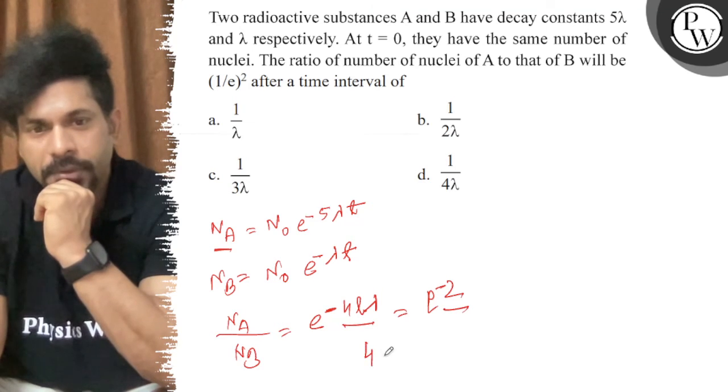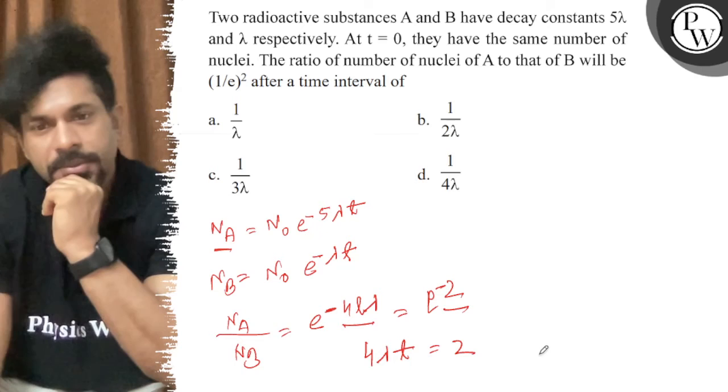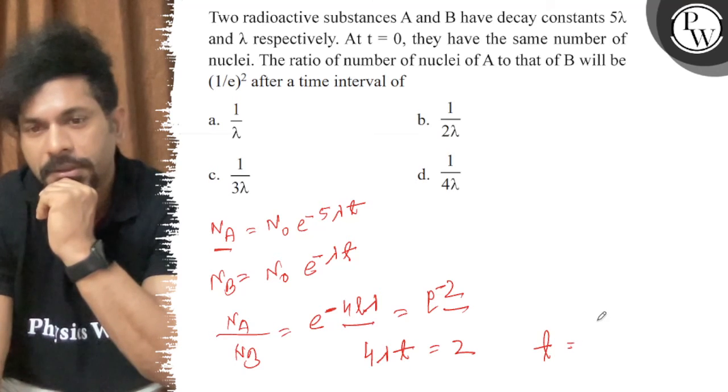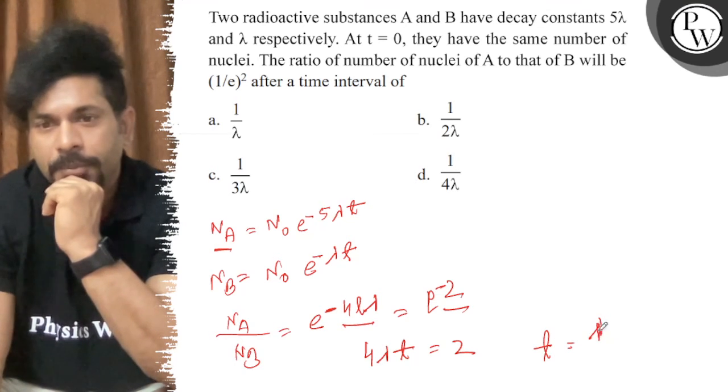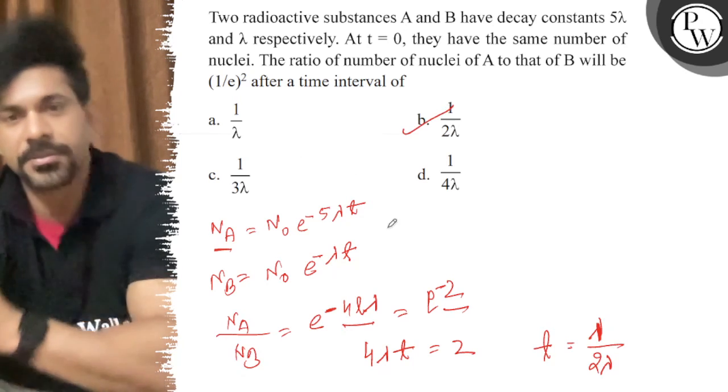So 4λt equals 2, therefore t equals 1/2λ. The answer is option B: 1/2λ. All the best.